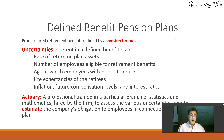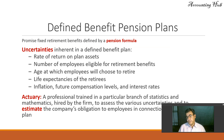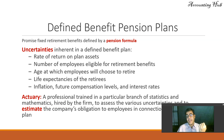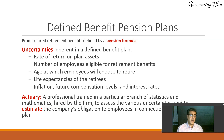First of all, what is a defined benefit pension plan? A brief review: they are plans that promise fixed retirement benefits defined by a pension formula — for instance, one percent times years of service times last annual salary. Uncertainty is inherent in a defined benefit plan: rate of return of plan assets, number of employees, age at which employees will choose to retire, life expectancies, and inflation.